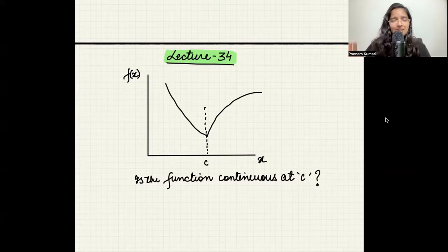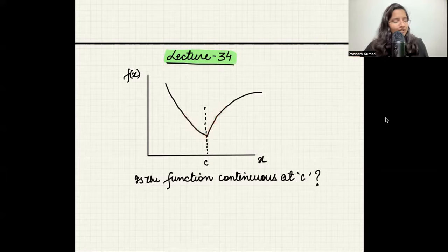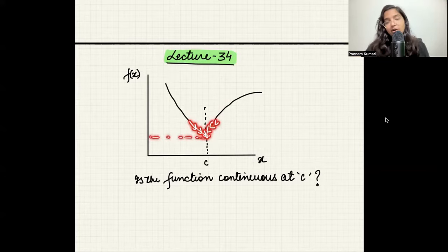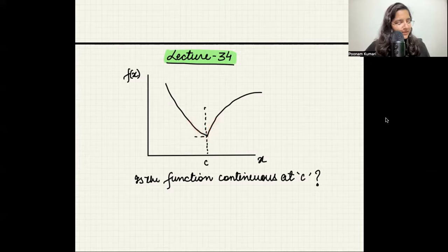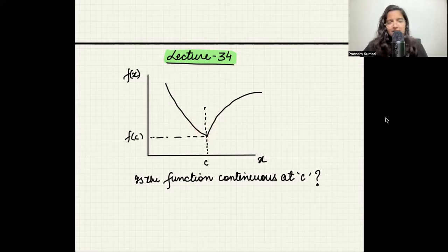The normal definition is: if you can draw the graph without picking up your pen, that means the function is continuous. When you approach from the left-hand side, the function takes this value; from the right-hand side, it takes this value; and the function value is also this — that is f(c). So this tells us the function is continuous at point c.